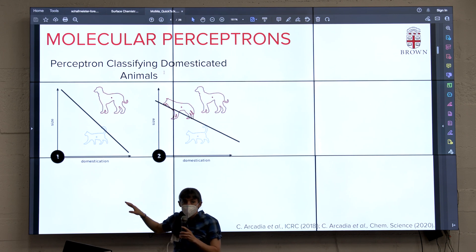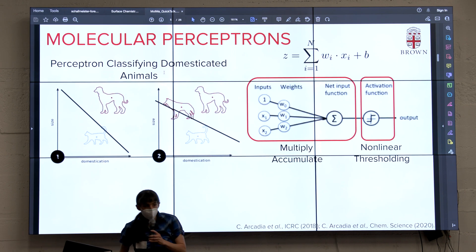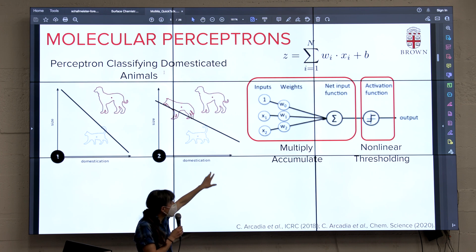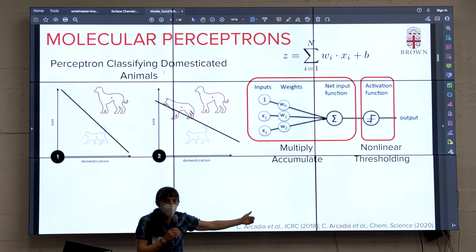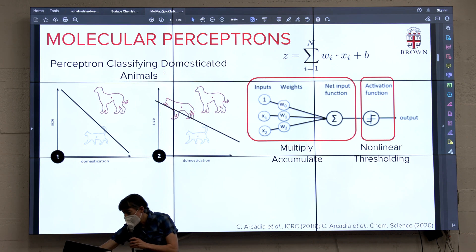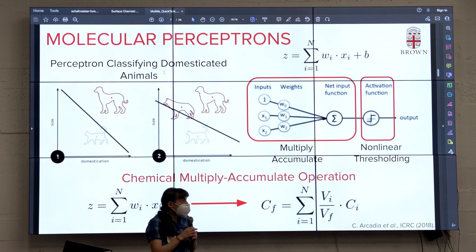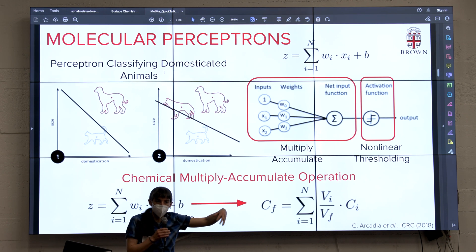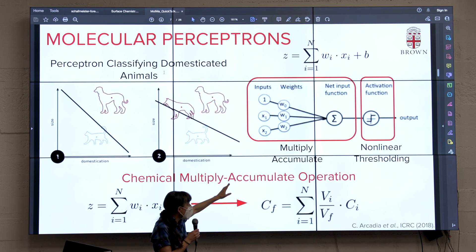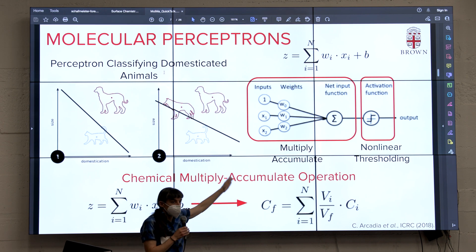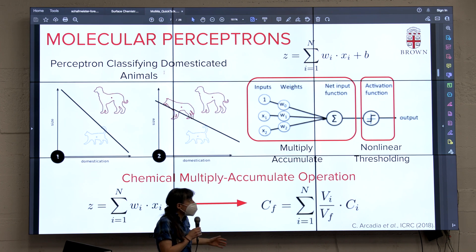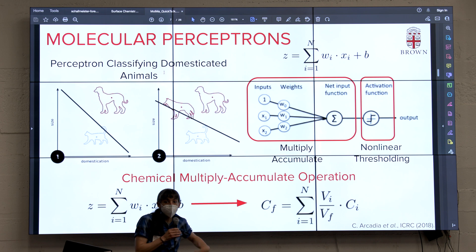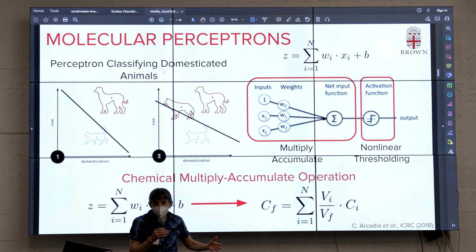What's convenient about perceptrons is that the basic functional units are multiply-accumulates and activation functions operated on those multiply-accumulates. Molecules do this pretty readily. Whenever you have a unique species of a molecule, its concentration is a weight and its identity is like one of the inputs. When you mix fluids together, you automatically get a multiply-accumulate function. You can also get these functions using kinetics.